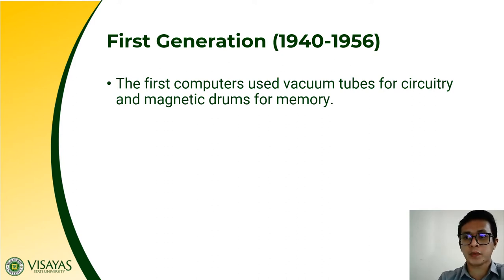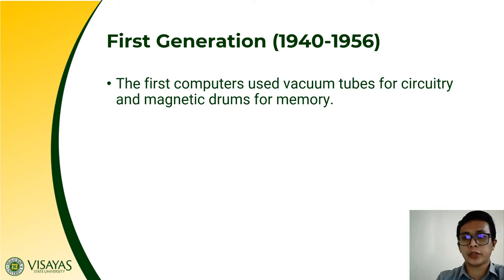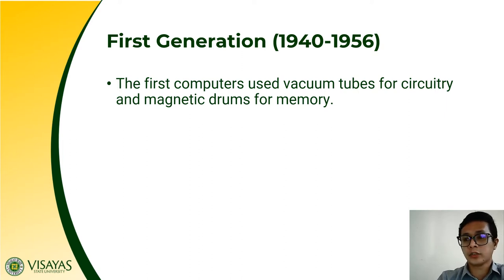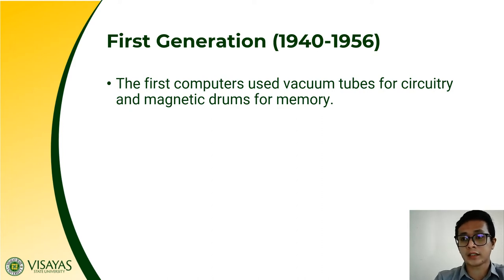The first generation computers consist of two major components: vacuum tubes for circuitry and magnetic drums for memory. There are no electronic boards in the first generation computers because vacuum tubes were used. Inside the vacuum tube there is an evacuated gas — there is no air in it. Since it conducts electricity, it loses heat, and the vacuum tubes can get very hot while the computer is in use.